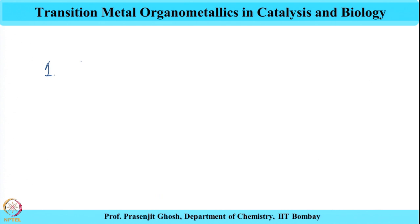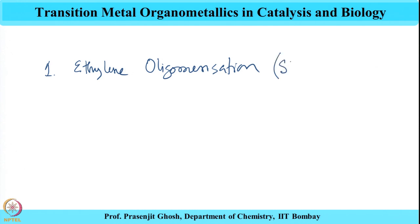Welcome to this course on Transition Metal Organometallics in Catalysis and Biology. In this series of lectures we have been discussing the oligomerization of alkenes and alkynes. We have discussed four kinds of oligomerization reactions, starting with ethylene oligomerization, and in that context we discussed the Shell Higher Olefin Process, or the SHOP process, which uses a nickel catalyst.